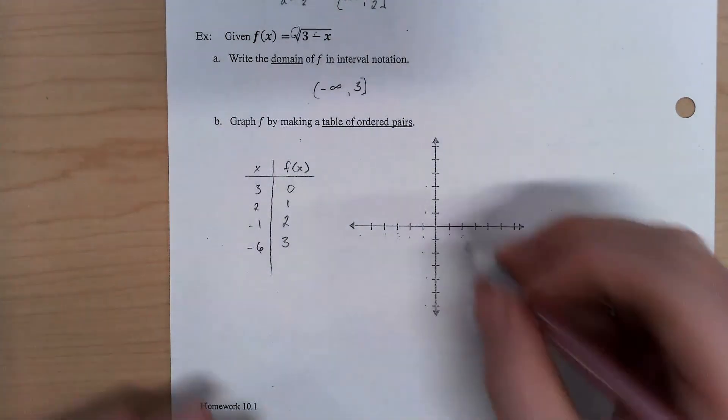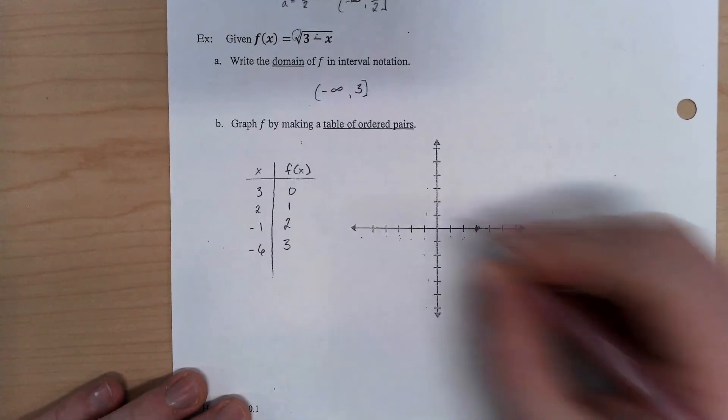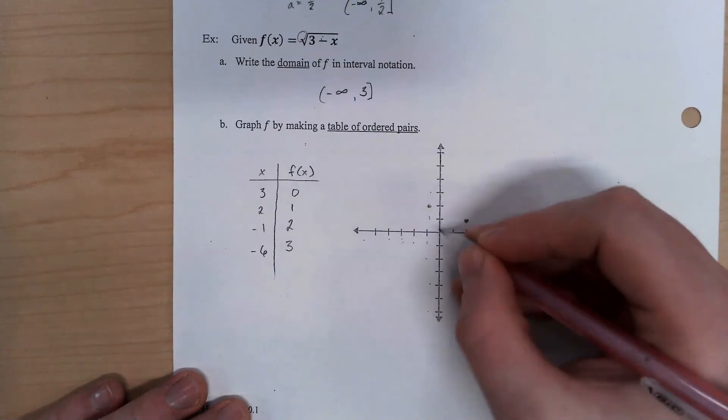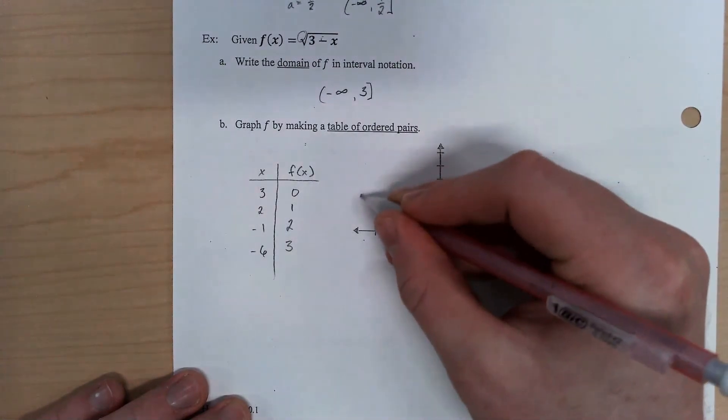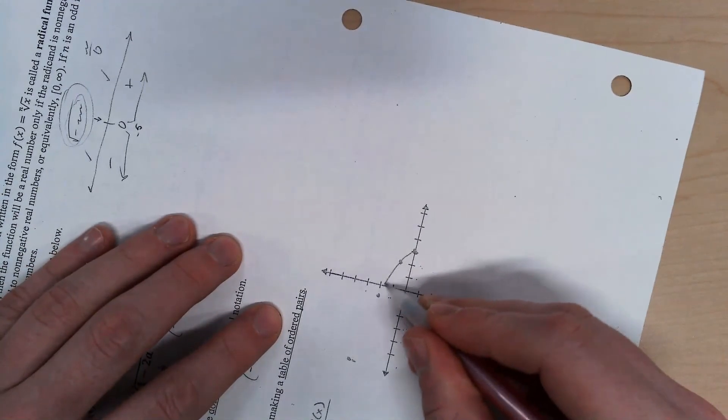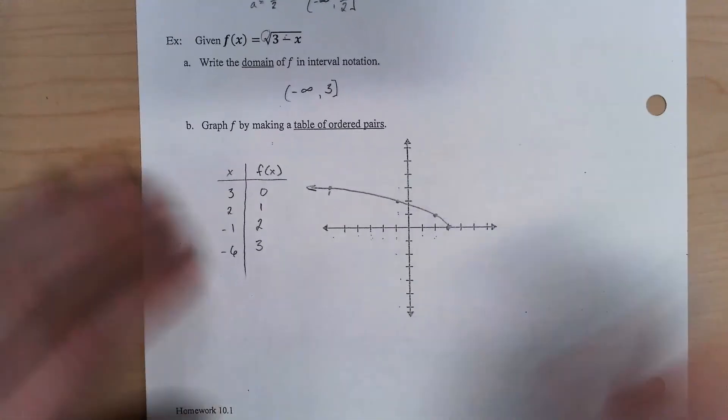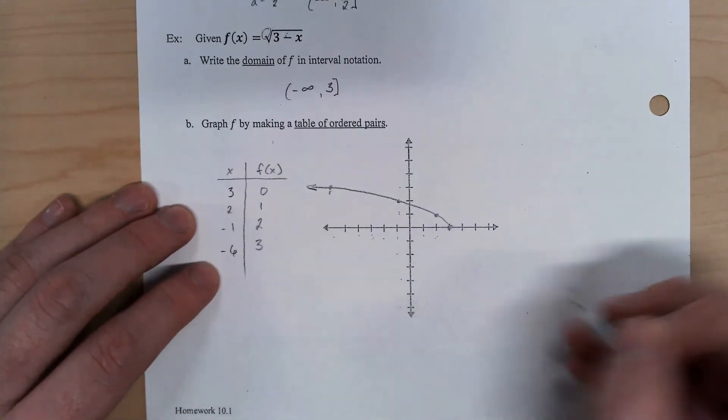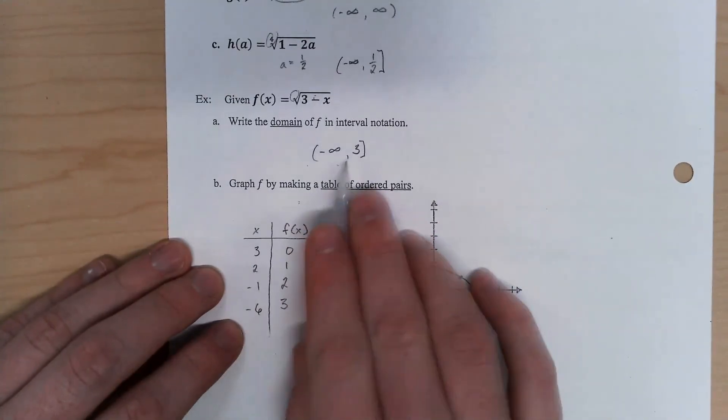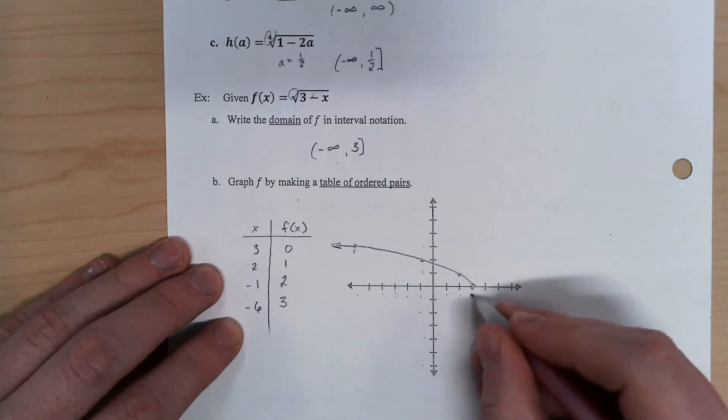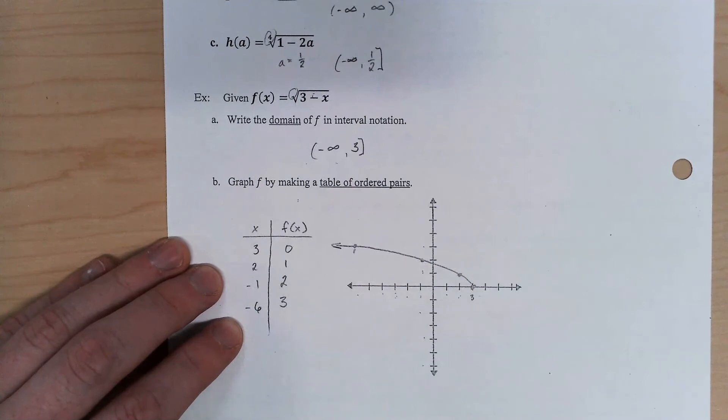But now, let's graph. So over three, up zero. Over two, up one. Back one, up two. Back six, up three. A little higher than that. And so I know my graph is going to look like this. Notice that I have a real hard stop right here. I didn't try and guess some kind of trend off this way because I know my domain stops here. There isn't any graph over there. Anything above positive three is outside of my domain.